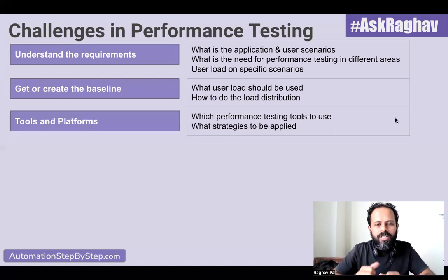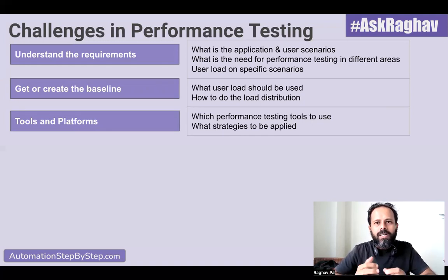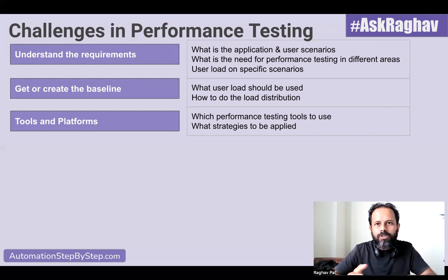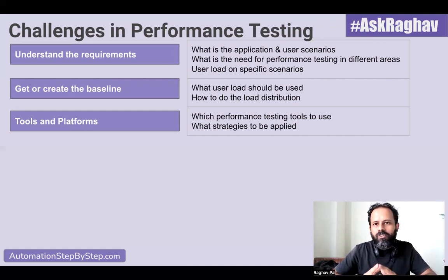The third challenge you will face is in selecting the tool and platforms. Here, you can apply your knowledge of performance testing or take help from your seniors or people who know performance testing. You can decide what performance testing tool to use for this particular application — whether to go with JMeter, Gatling, or some other tool. Apply your knowledge or take help from your team and then very carefully select the testing tool and platform.